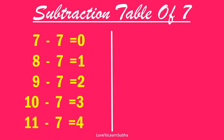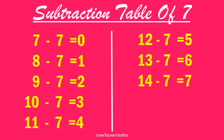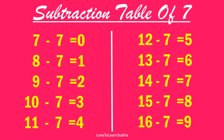Subtraction table of 7. 11 minus 7 equals 4. 12 minus 7 equals 5. 13 minus 7 equals 6. 14 minus 7 equals 7. 15 minus 7 equals 8. 16 minus 7 equals 9.